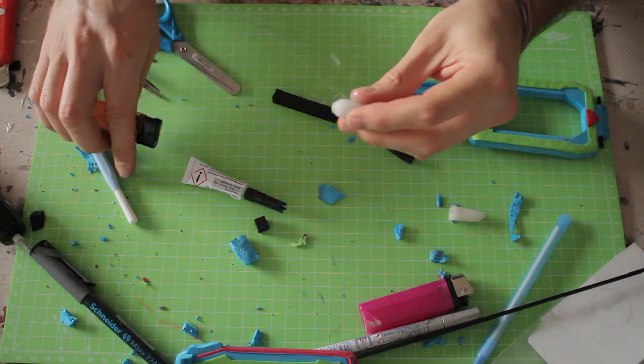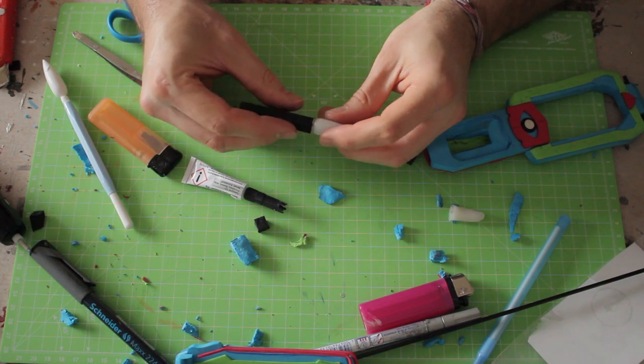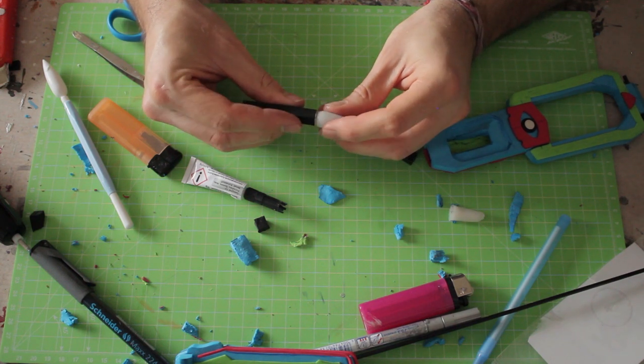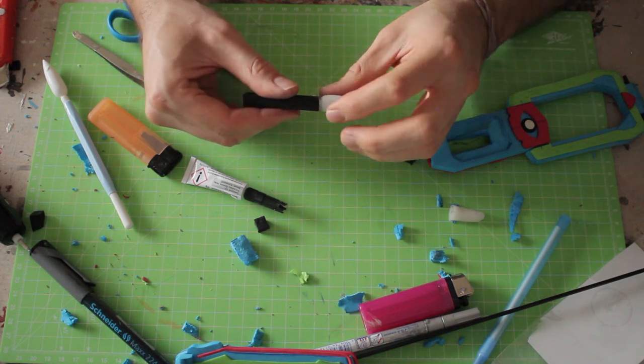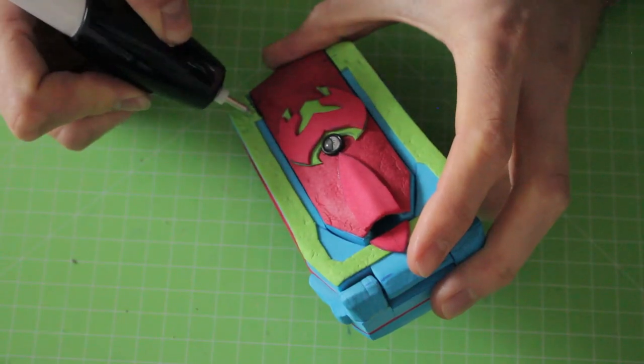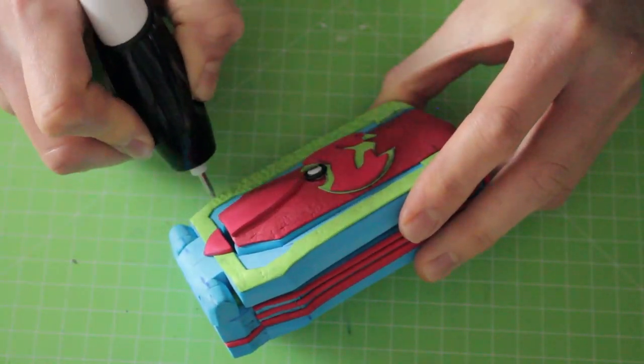Using transparent resin for the crystal would look awesome I think, but I don't have the material right now, so thermoplastic is the way to go. Then I used my engraving tool to add more details to the foam, but be careful not to tear the material apart.